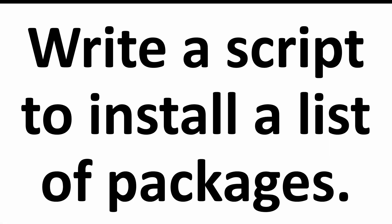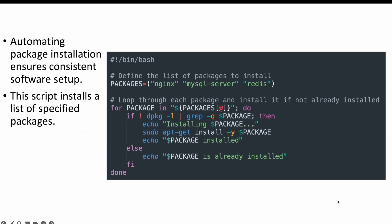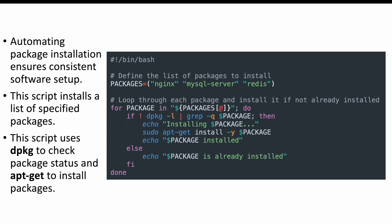The next question is: write a script to install a list of packages. As a DevOps engineer, installing multiple packages to multiple servers is something you'll generally end up working with. Automating package installation ensures your software setup is consistent across servers. We declare a variable with an array of packages to install, do a loop picking each package one by one, use dpkg to check if the package is already installed, and if not, use apt-get to install it. If the package is already present, we print that it is already installed.